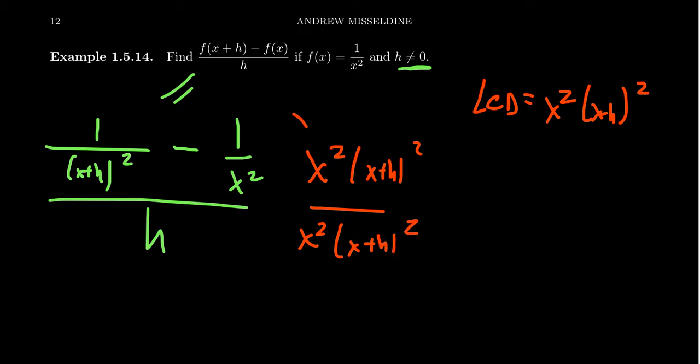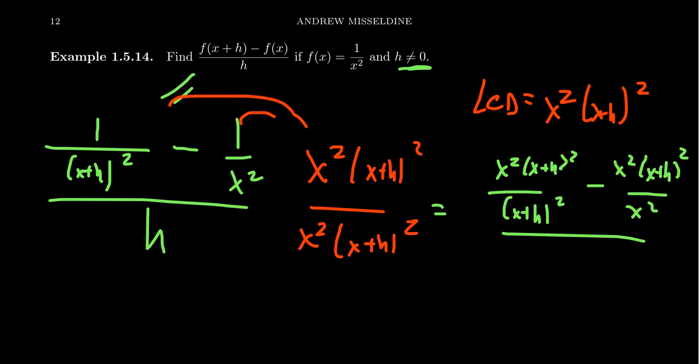Now in the numerator, you're going to distribute these things through. In the denominator, leave things alone because we do not multiply out denominators. With the first one, you'll end up with [x²(x+h)²]/(x+h)². For the second baby fraction, you get x²/(x+h)² over [hx²(x+h)²].